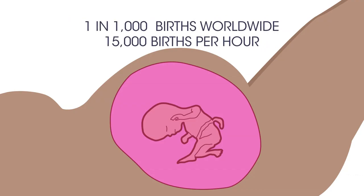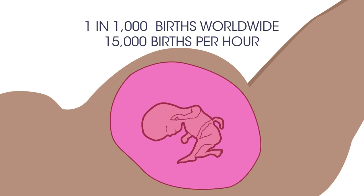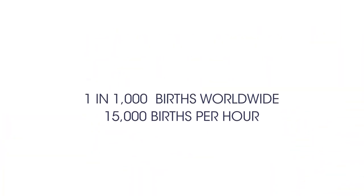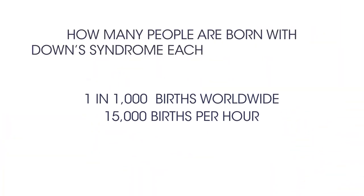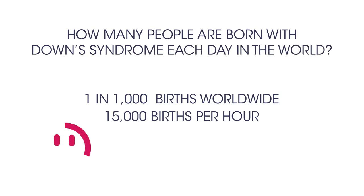The estimated incidence of Down syndrome is about one in one thousand births worldwide. There are about 15,000 births per hour in the world. So how many people are born with Down syndrome each day in the world? Pause the video while you work it out.